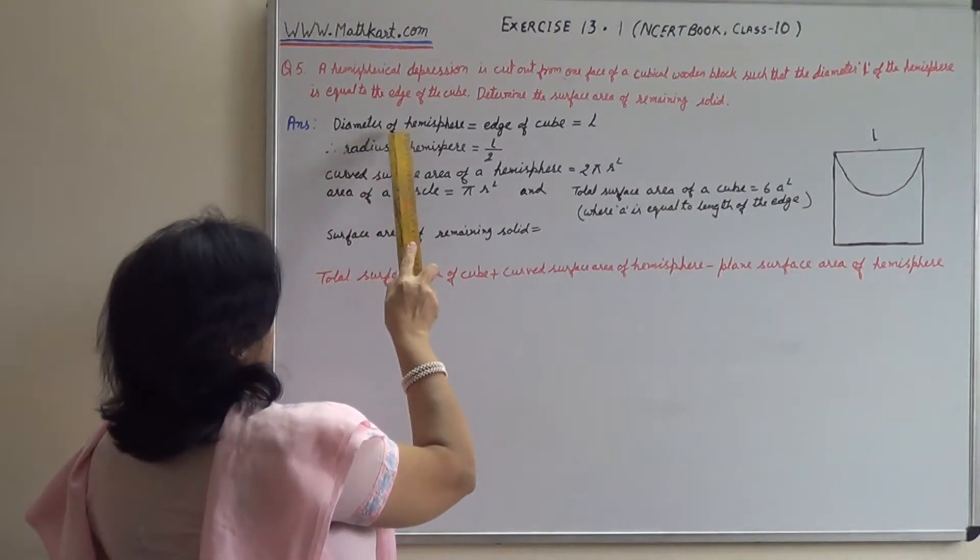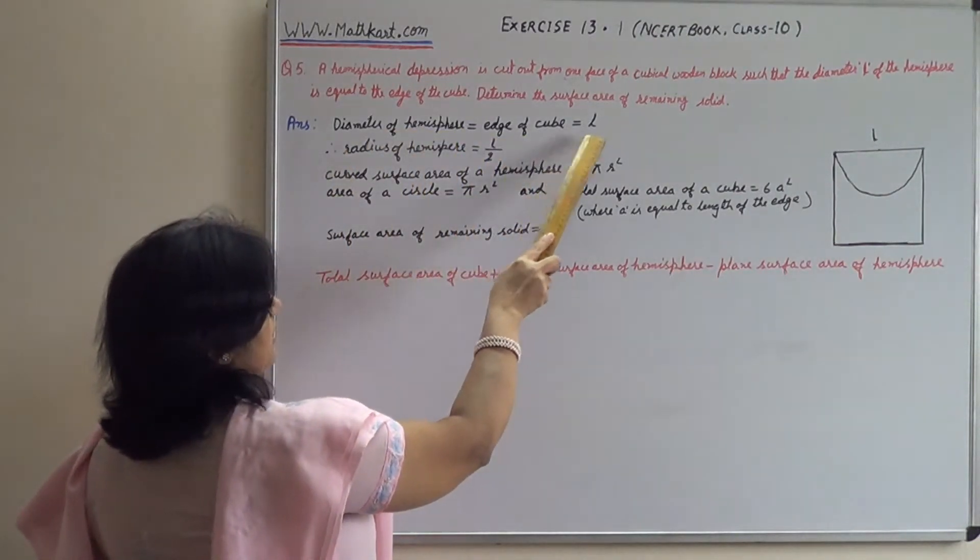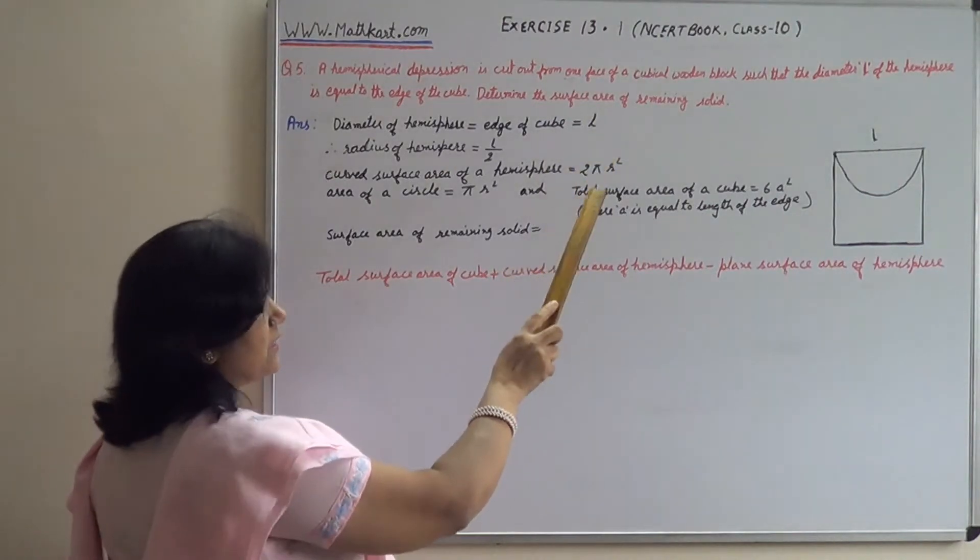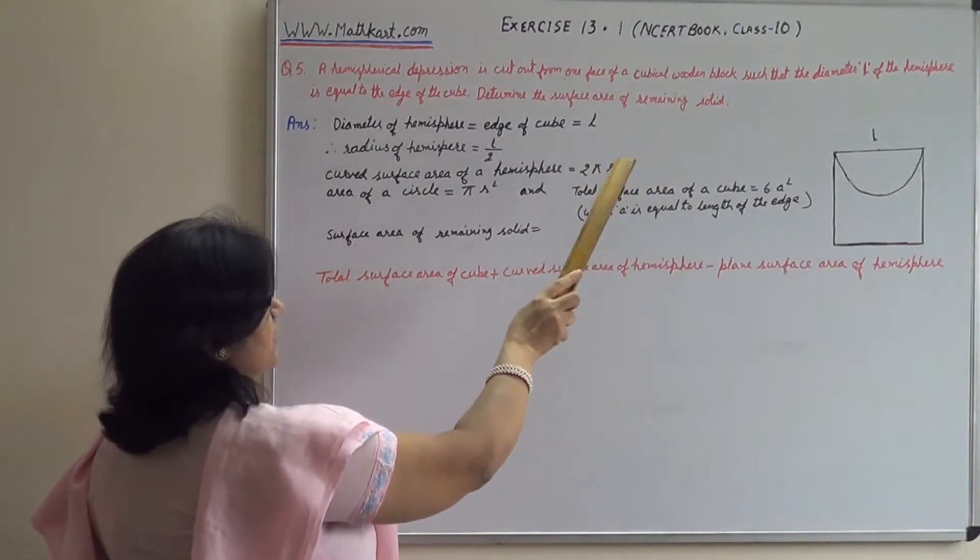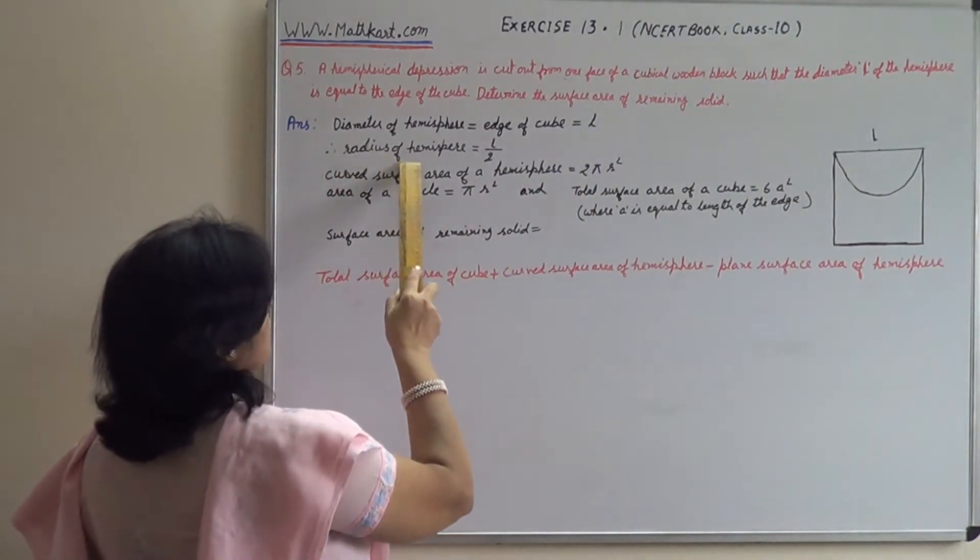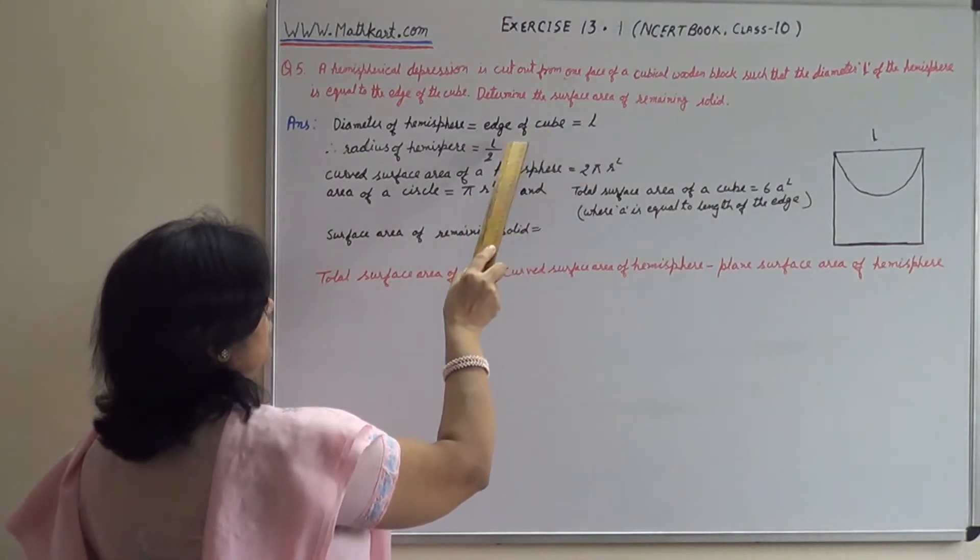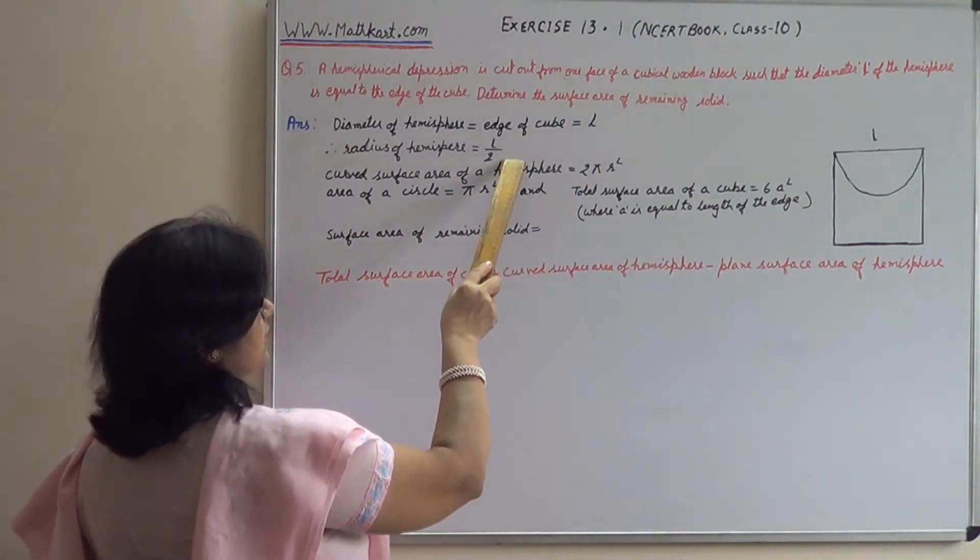Diameter of the main hemisphere equals edge of cube equals L. Whatever the unit of L is, everything will be in that unit. Radius of the hemisphere - if diameter is L, then radius is L upon 2.